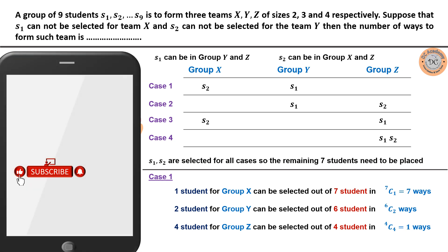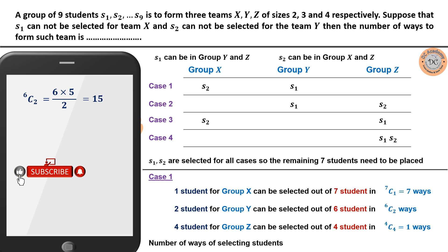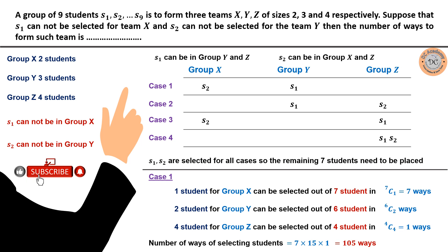The total number of ways for Case 1 is 7 × 6C2 × 1. Now 6C2 = (6×5)/2 = 15. So the number of ways for Case 1 is 7 × 15 × 1 = 105.